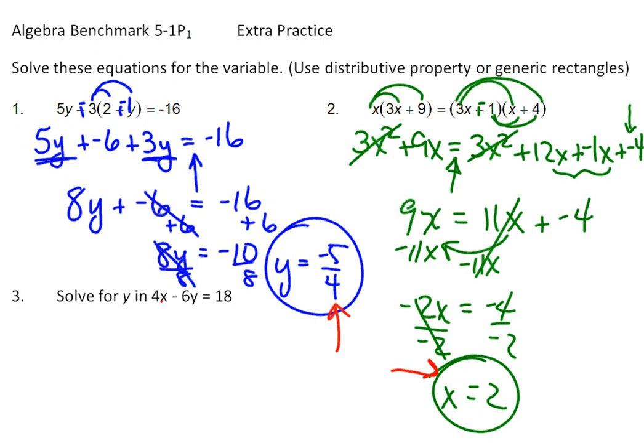So I'm going to bring my 4x to the other side. And this is really like a plus problem here. It's like plus negative 6y here. So I'm really adding 4x. So to undo it, I'm going to subtract 4x or add negative 4x to both sides. So you get negative 6y equals 18 minus 4x.